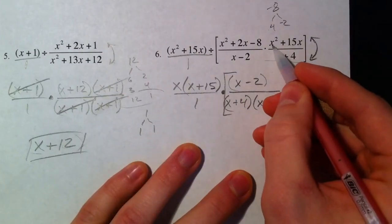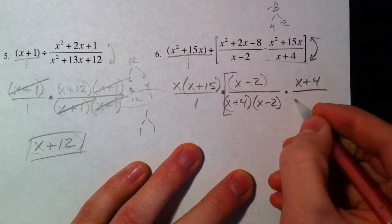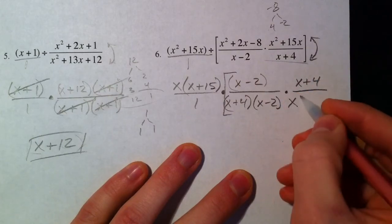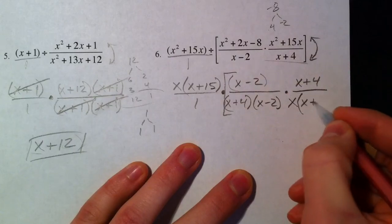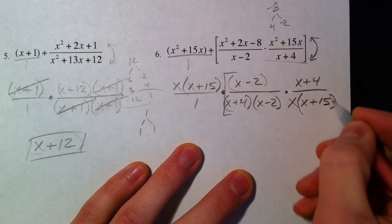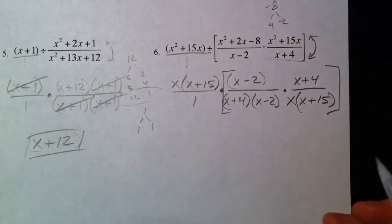And then we've got another X squared plus 15X, and so that's actually going to cross out with that whole other one, but they both have an X in them: X plus 15. All right.